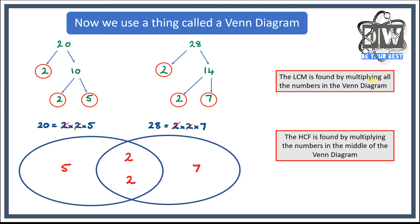Now the LCM is all of these numbers multiplied together: 5 times 2 times 2 times 7. You'll need a calculator — that gives 140. The highest common factor is just the two numbers in the middle multiplied together: 2 times 2 equals 4. How quick and easy is that?